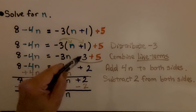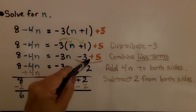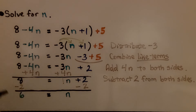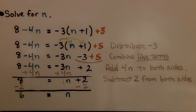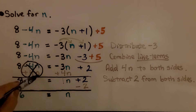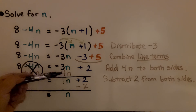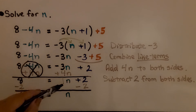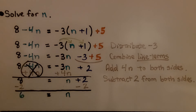We can add these constant terms together — they are not variable terms. Negative 3 plus 5 brings us up to a positive 2. Now we have 8 minus 4n is equal to negative 3n plus 2. We can add 4n to both sides to eliminate this term. We have negative 4n, so we add 4n to make a zero pair and remove it. When we add 4n to this side, we have negative 3n plus 4n, which brings us up to positive 1n. So now we just have n plus 2 on this side.